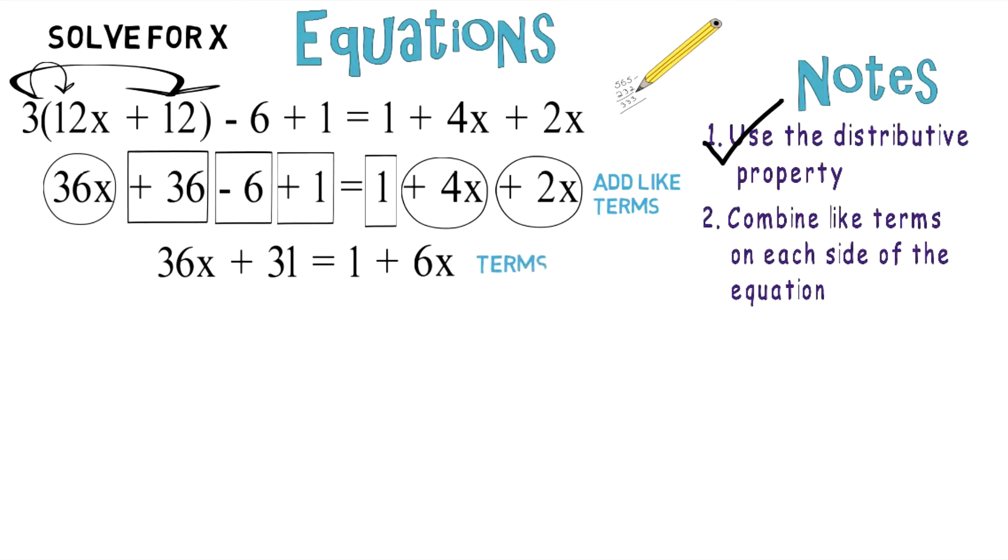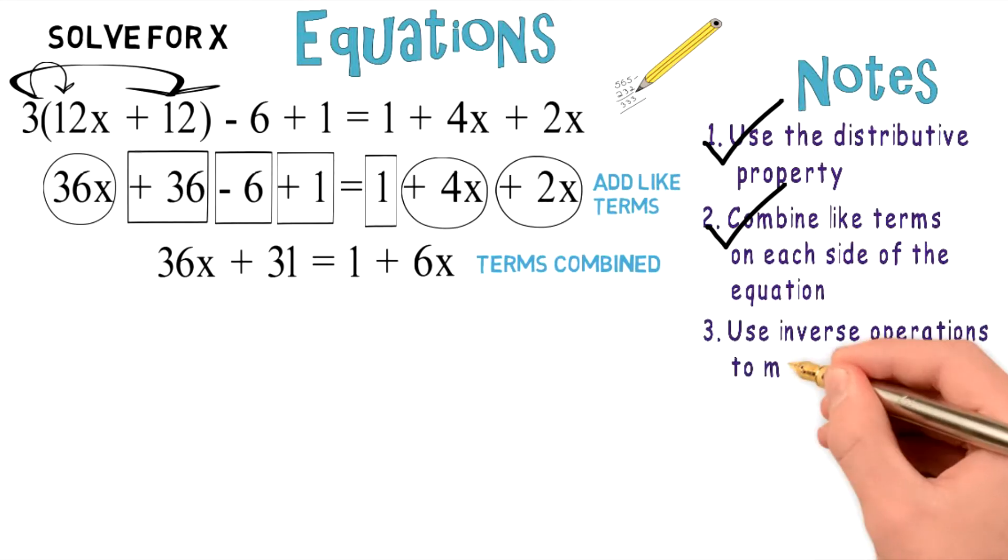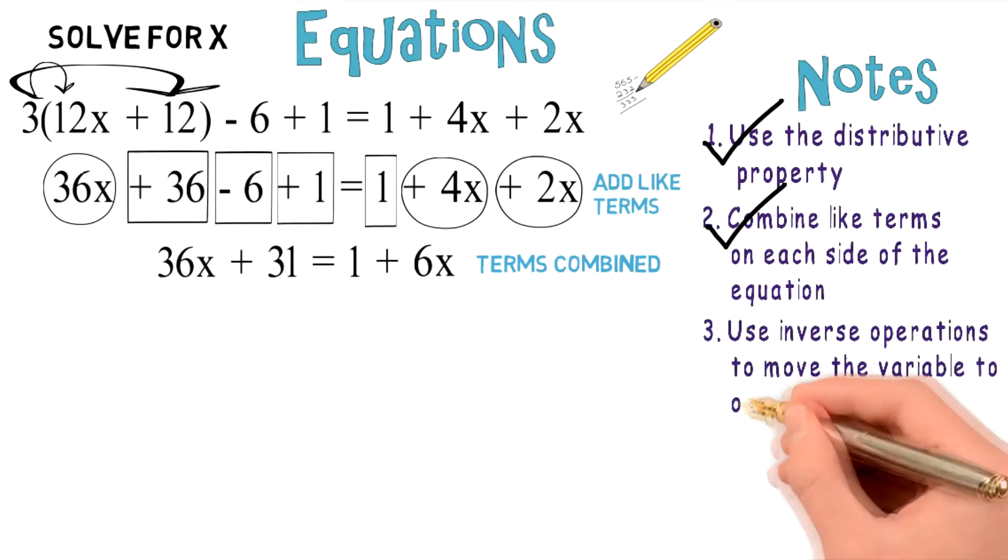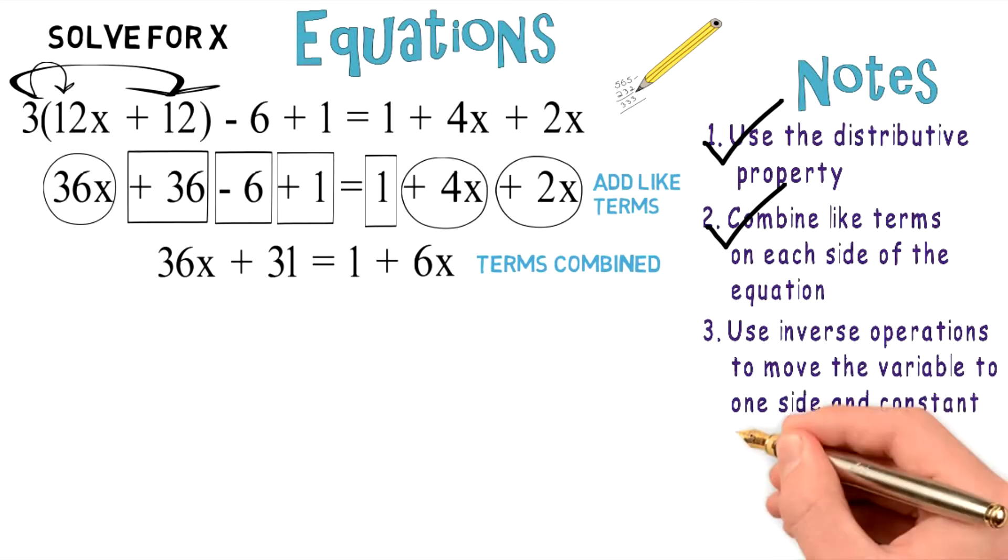Now, like terms are combined, so we can check off step 2. Let's move on to step 3: use inverse operations to move the variable to one side and the constant to the other side.